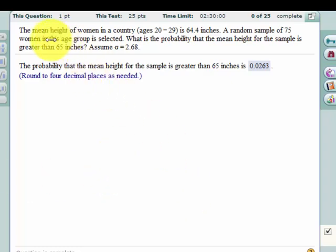The hint you should see is that you're given the mean height of the population of women ages 20 to 29, 64.4 inches, a random sample which tells you this is more than likely a normal distribution of 75, and a sigma which is the population standard deviation of 2.68. And they ask, what is the probability that the mean height of the sample is greater than 65 inches?